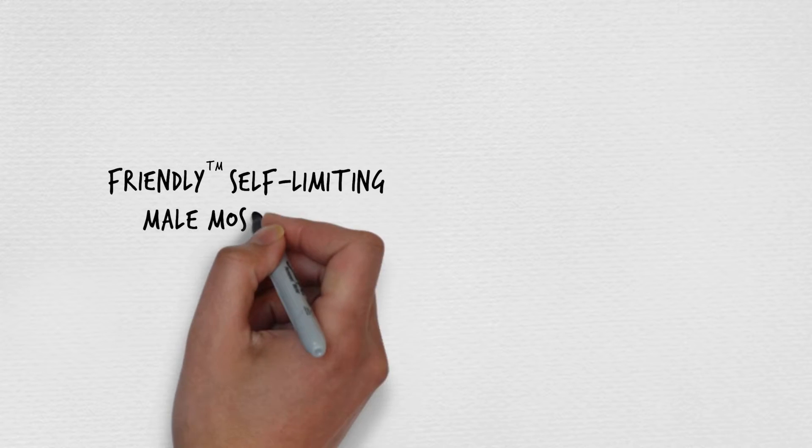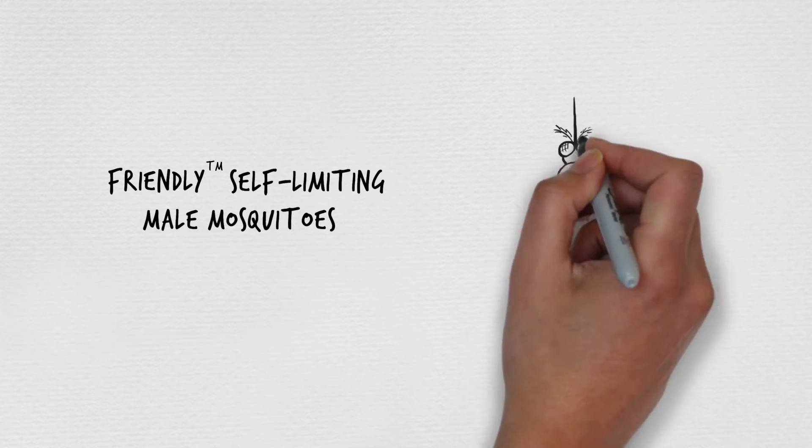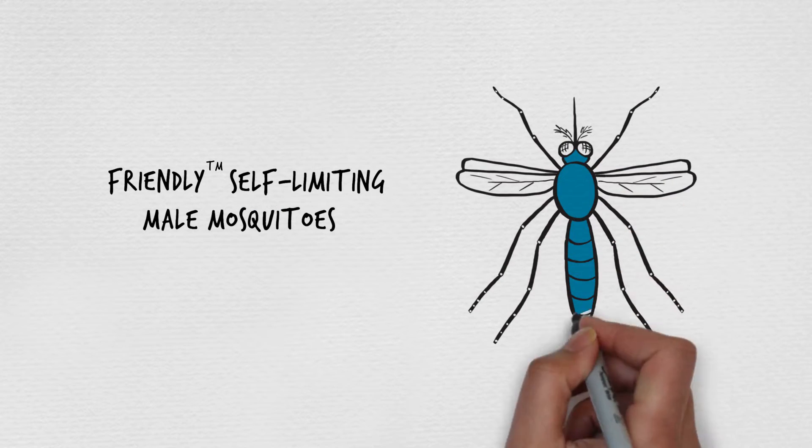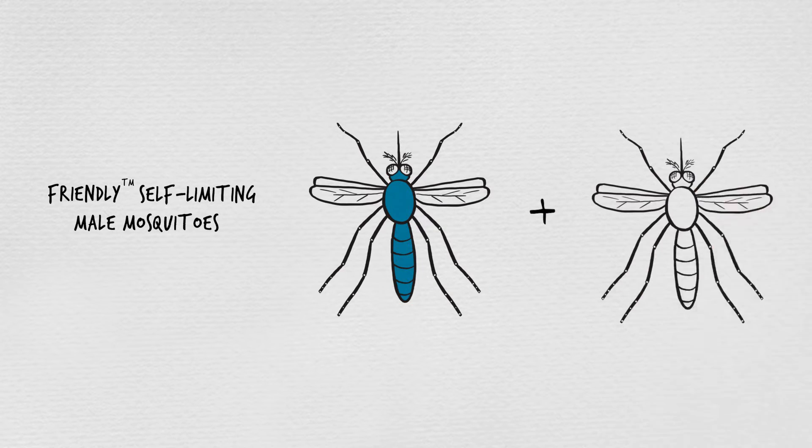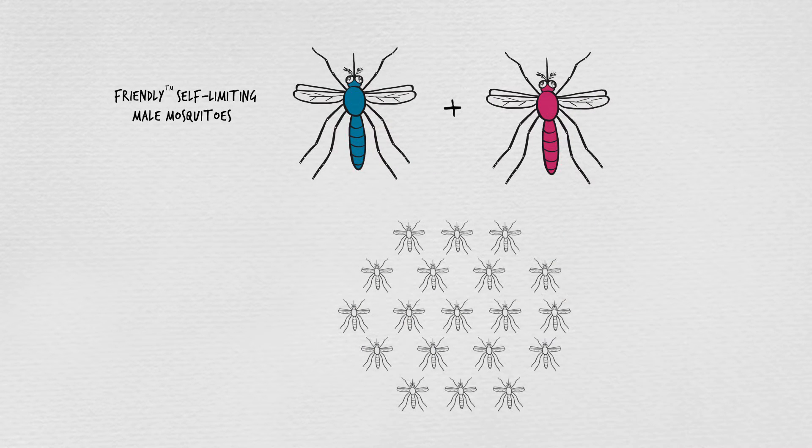How does it work? We deploy male mosquitoes genetically engineered to be self-limiting. Why males? Because they don't bite or transmit disease. These friendly mosquitoes mate with the females that bite humans. The males pass a gene to all their offspring, which causes them to die before reaching adulthood.